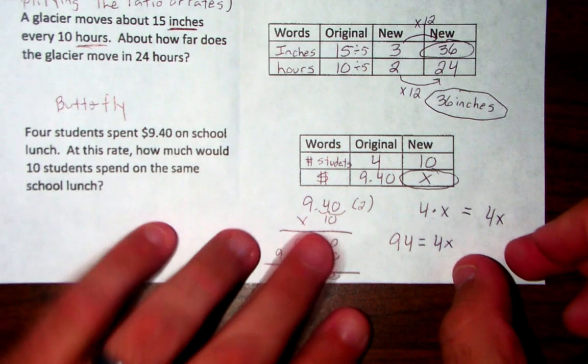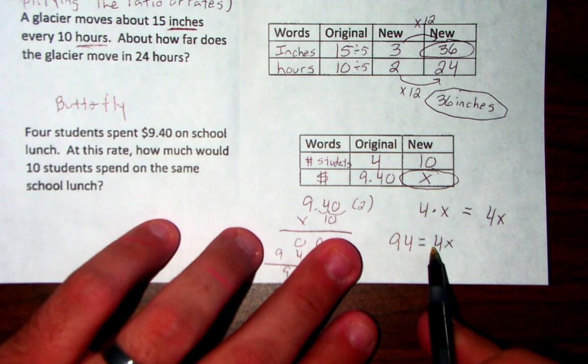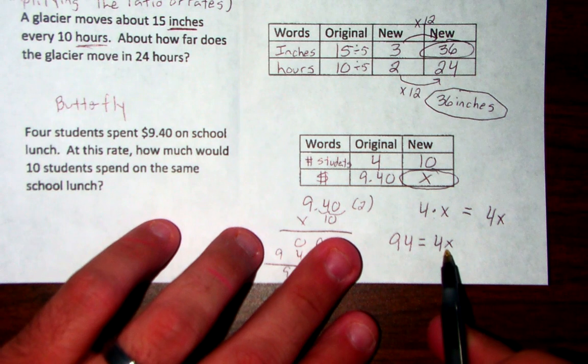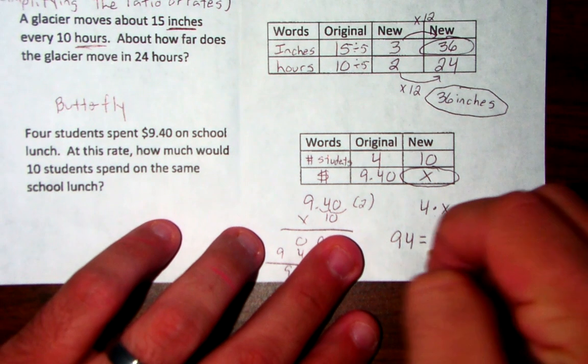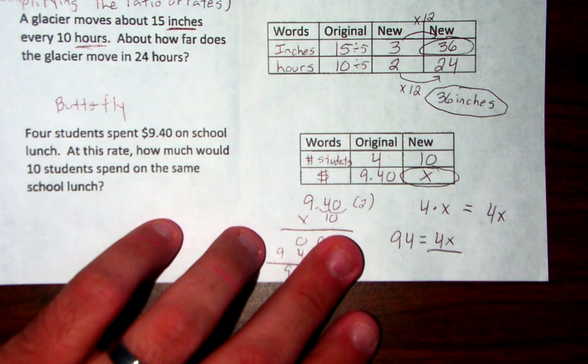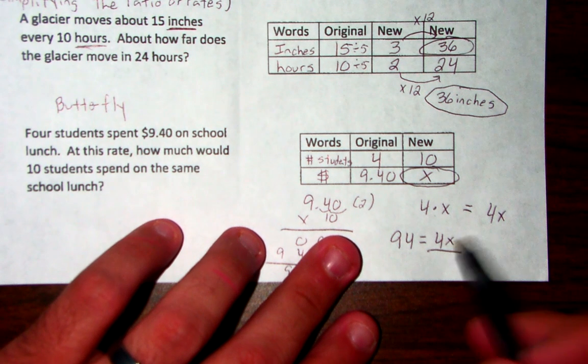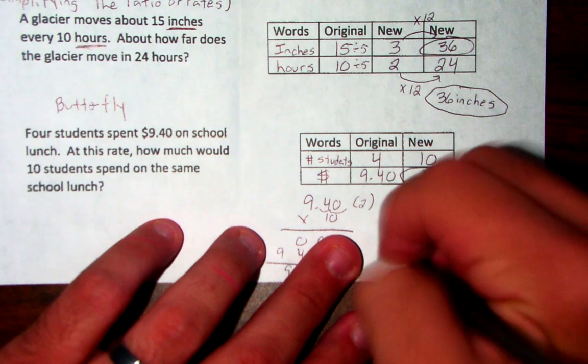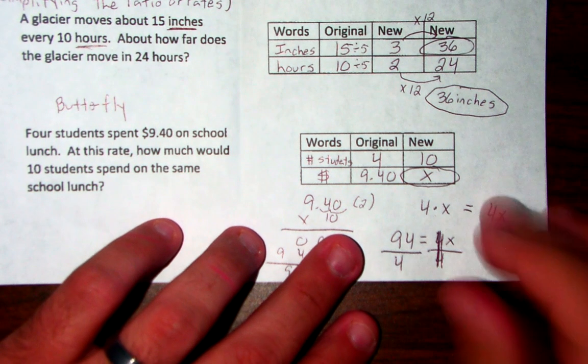So here's how you read this. 94 is equal to 4 times some unknown number. So what we're going to do is we're going to do the opposite operation. The opposite of multiply is to divide. And I'm going to divide by the number in front of the x. In this case, it is 4. So what is 94 divided by 4?